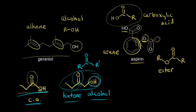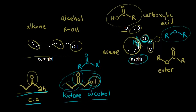Another common mistake on aspirin: students look at the oxygen and say, 'I have an R group on one side of the oxygen and an R group on the other side, so isn't that an ether?' ROR would represent an ether. However, we have a carbonyl right next to this oxygen, and that carbonyl is what makes this an ester, not an ether.